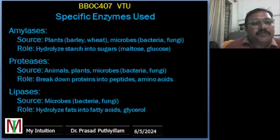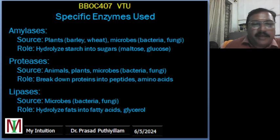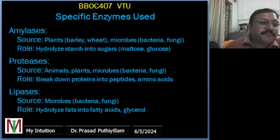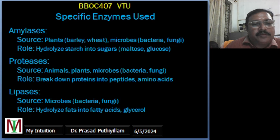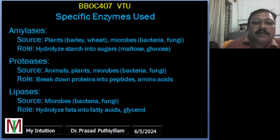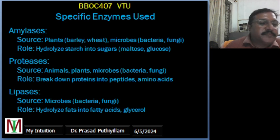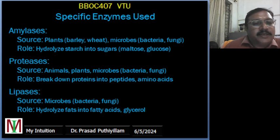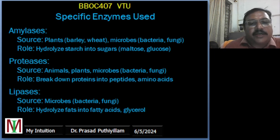The second important example is proteases. The main source of proteases is from animals, plants, or microbial sources like bacteria and fungi. The role of proteases is to break down proteins into peptides and amino acids, improving the flavor, texture, and digestibility in processes like meat tenderization, cheese production, and brewing.